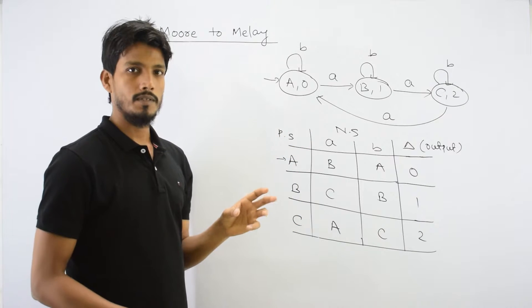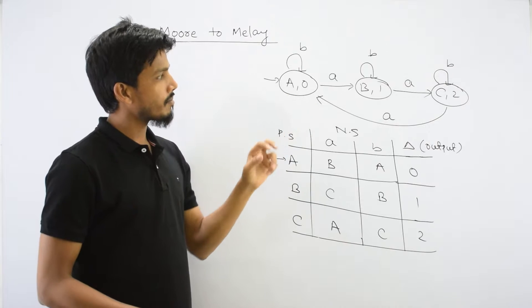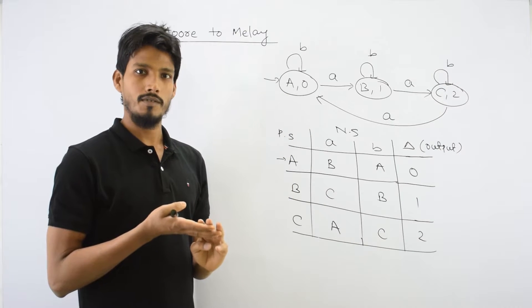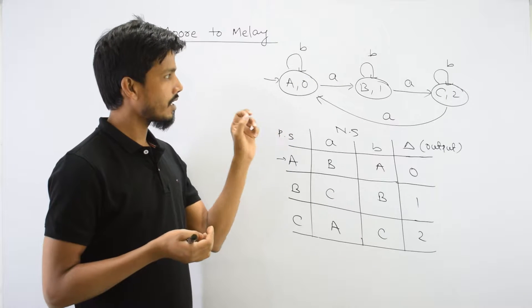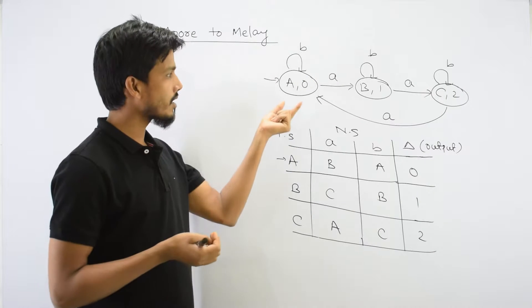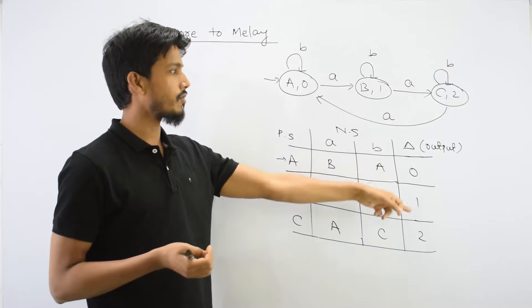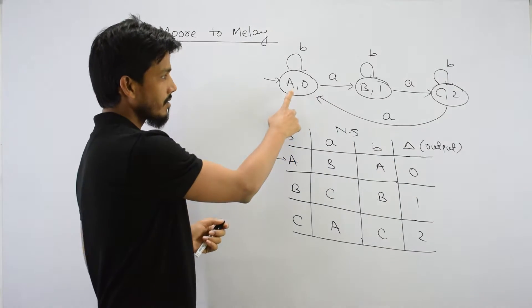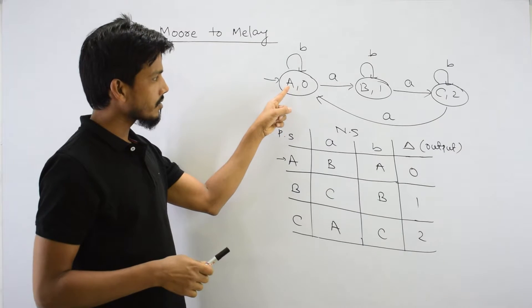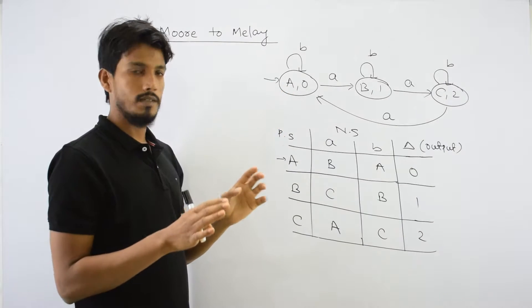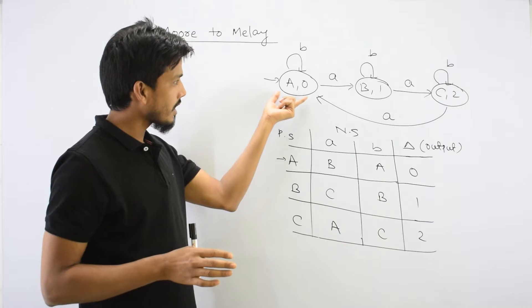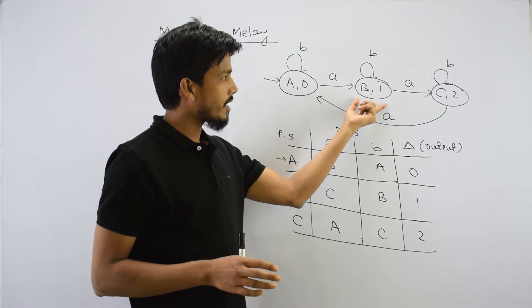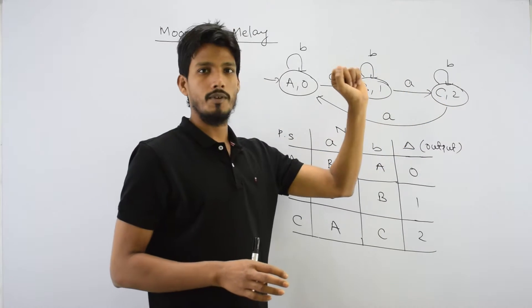What is a Moore machine? We already know the definitions of Moore and Mealy. There is a similarity between Moore and Mealy in that both machines are deterministic. The basic difference is that in the Moore machine, the output is associated with the state. The output of state A is 0, state B gives output 1, and state C gives output 2.